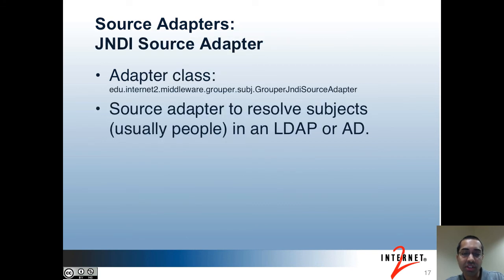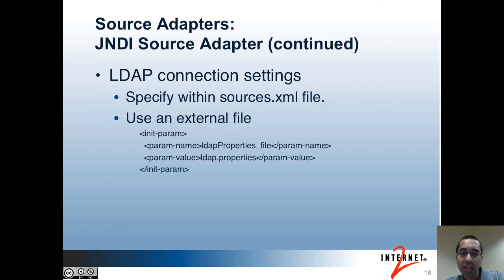The last source adapter is the JNDI source adapter. You can use this source adapter to resolve subjects that are located in your LDAP or Active Directory. As of Grouper version 2.1, this source adapter now uses vt-ldap to talk to LDAP. This library takes into account performance improvements, including connection pooling. You can specify connection settings directly in the sources.xml file, or you can use an external properties file with the settings. In both cases, you can still have a separate file for the encrypted password. Using an external properties file has the advantage of allowing more vt-ldap configuration, like pooling customizations.